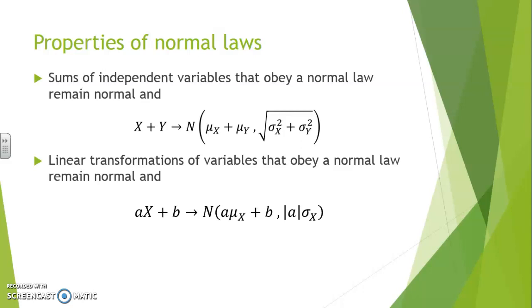Its average value undergoes the same transformation as the original variable itself. And you recognize the property that was used for standard deviations: absolute value of a times sigma X. And the horizontal translation b has no effect on the variability.